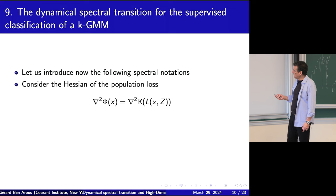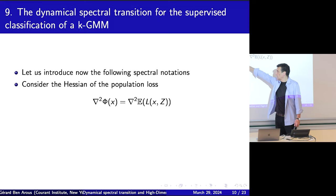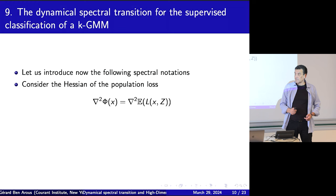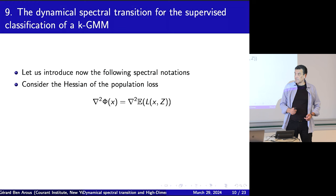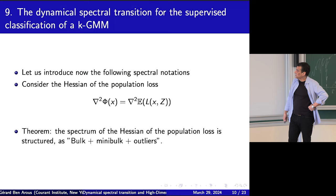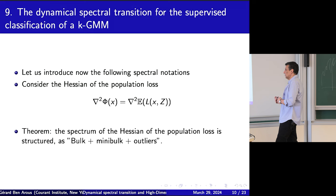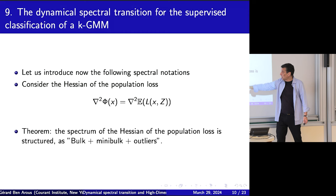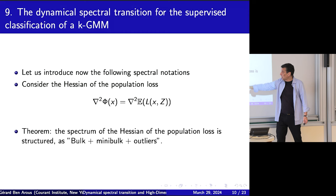Let me introduce spectral notation. First look at the Hessian of the population loss — the expectation of the loss with parameter x fixed, where x is in R^{d×K}. Theorem: the spectrum of this population Hessian has the structure — bulk plus mini-bulk plus outliers. The Hessian in R^{d×K} is made of K×K blocks: off-diagonal blocks and on-diagonal blocks.